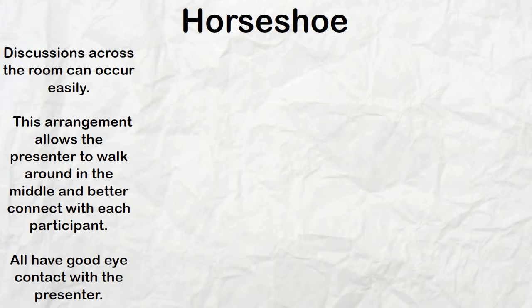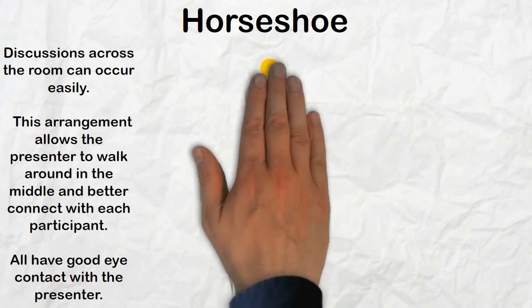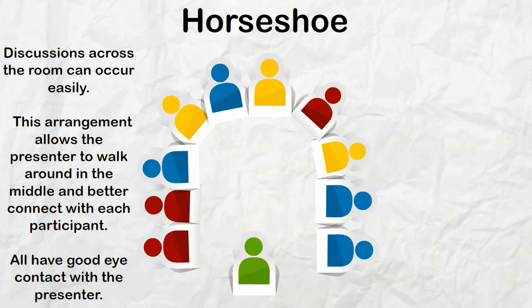Horseshoe. Discussions across the room can occur easily. This arrangement allows the presenter to walk around in the middle and better connect with each participant. All have good eye contact with the presenter.